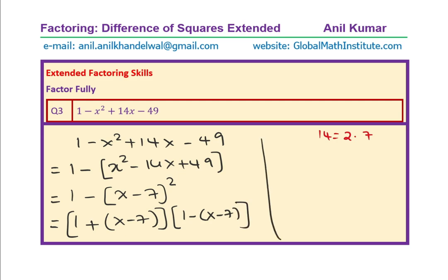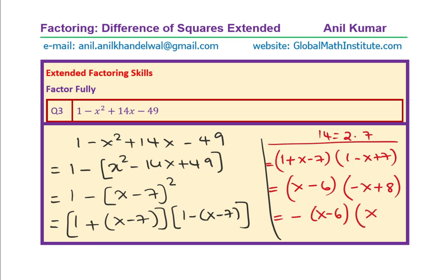And that gives me the answer which is (1+x-7) times (1-x+7), let's open the bracket. That is (x-6) times (-x+8). You can factor minus outside and write this as (x-6)(x-8). So, that is how you could factor this.